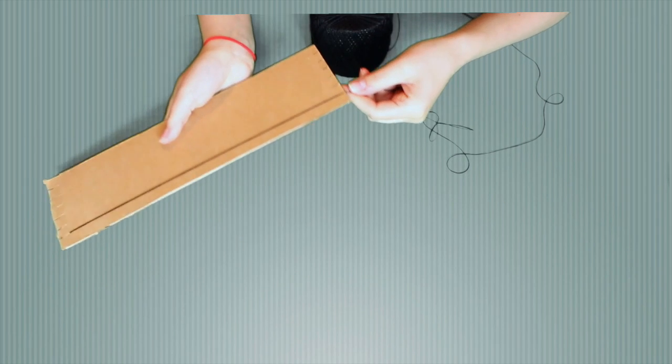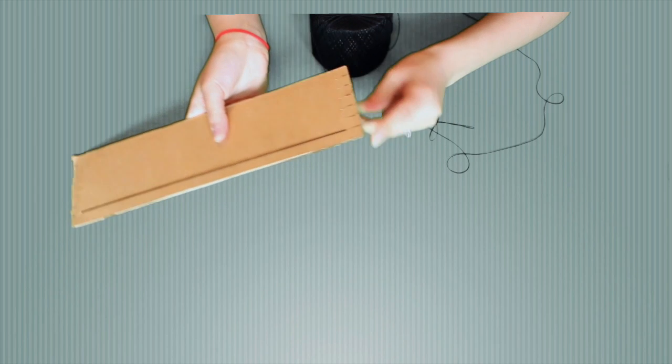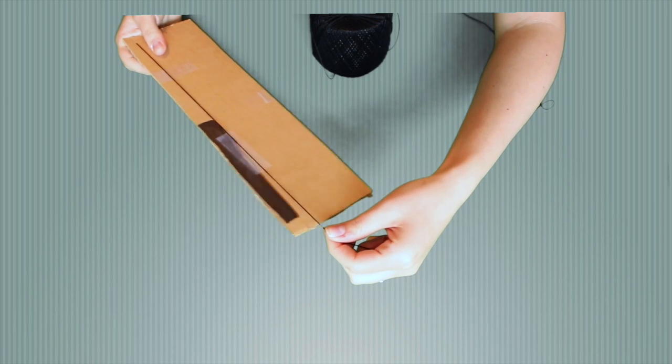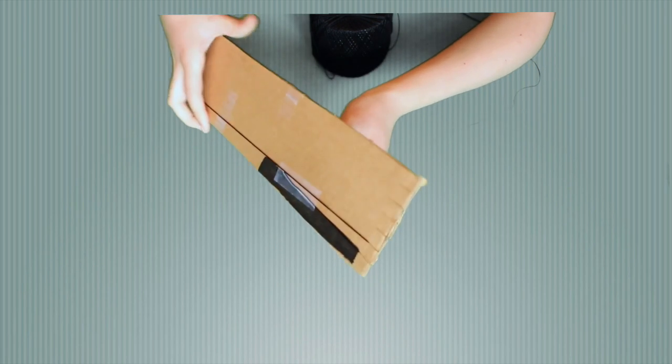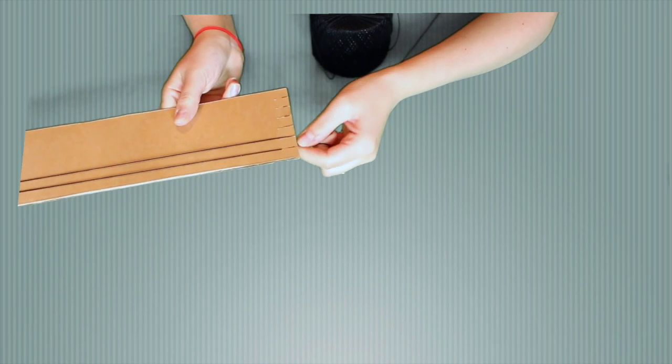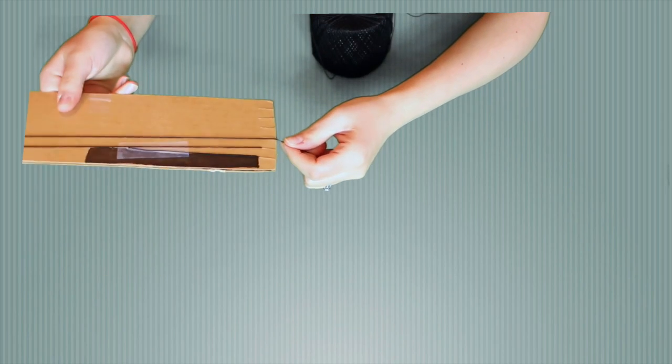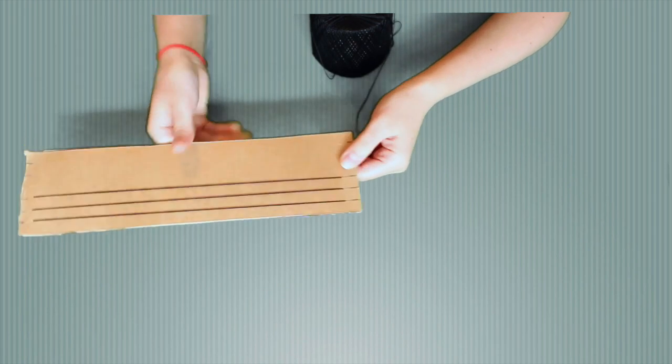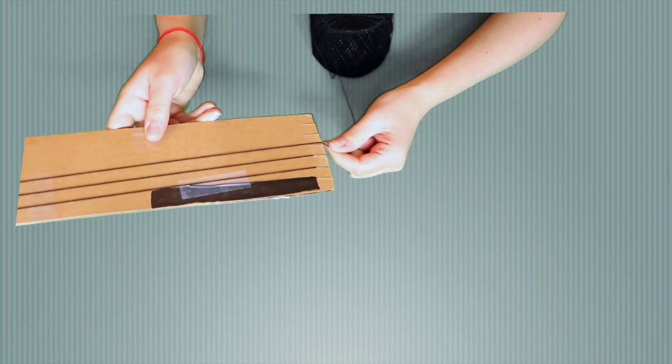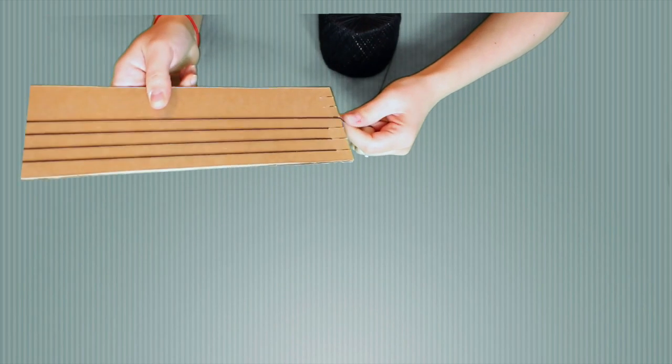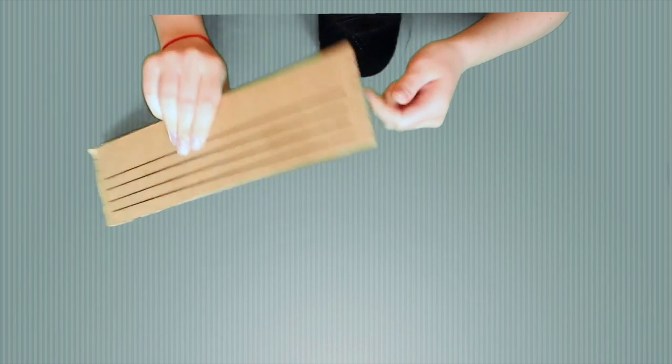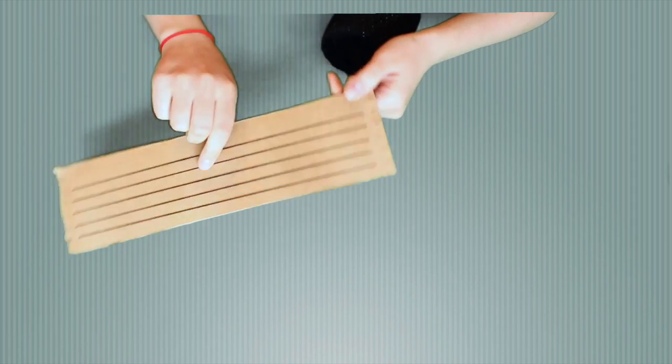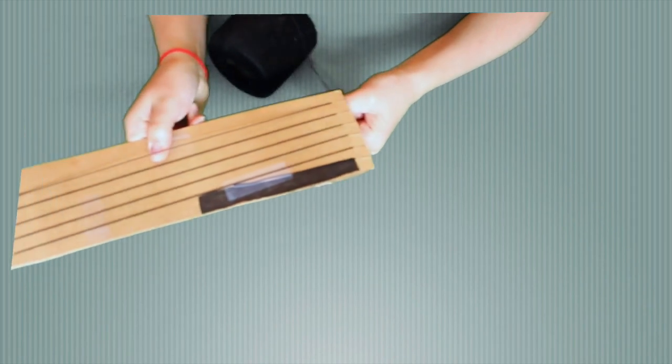Now you're going to wrap the thread around the loom securing the thread into each notch as you work. Wrap it around, secure in the notch. Each time make sure the thread goes in the notch.